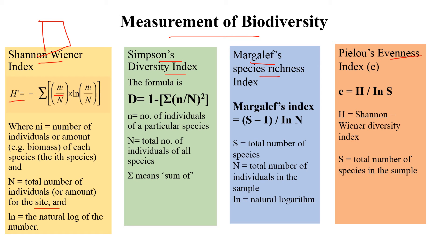The Simpson diversity index measures dominance. The formula is D = 1 − Σ[n(n−1)/N(N−1)], where n is the number of individuals of a particular species and N is the total number of individuals of all species. The Margalef species richness index estimates how rich your habitat is in terms of species. The equation is: (S − 1) / ln(N), where S is the total number of species and N is the total number of individuals in the sample, with ln being the natural logarithm.